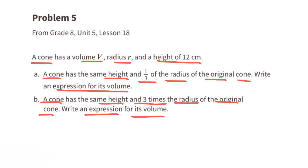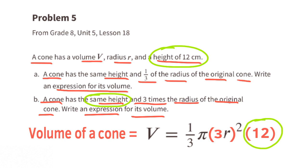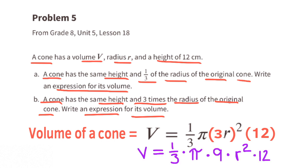For this one we can use the formula for finding the volume of a cone. Instead of substituting the one-third in front of the radius we'll substitute a three in front of the radius. And it has the same height so we'll keep the height of 12.